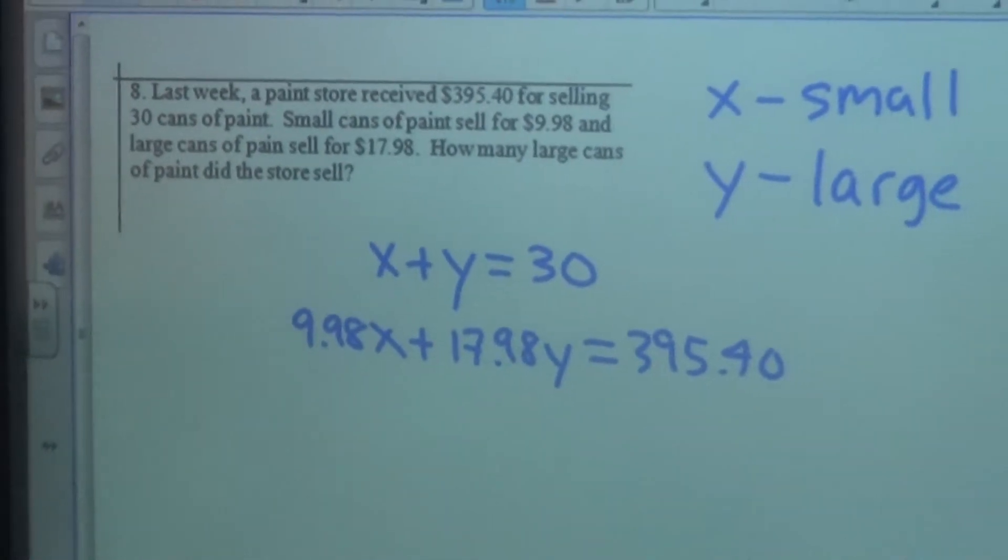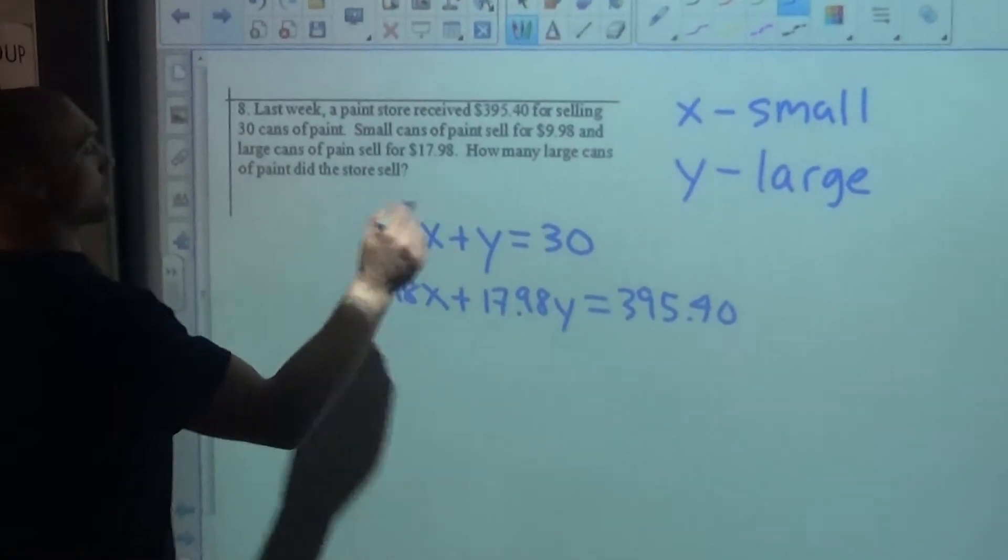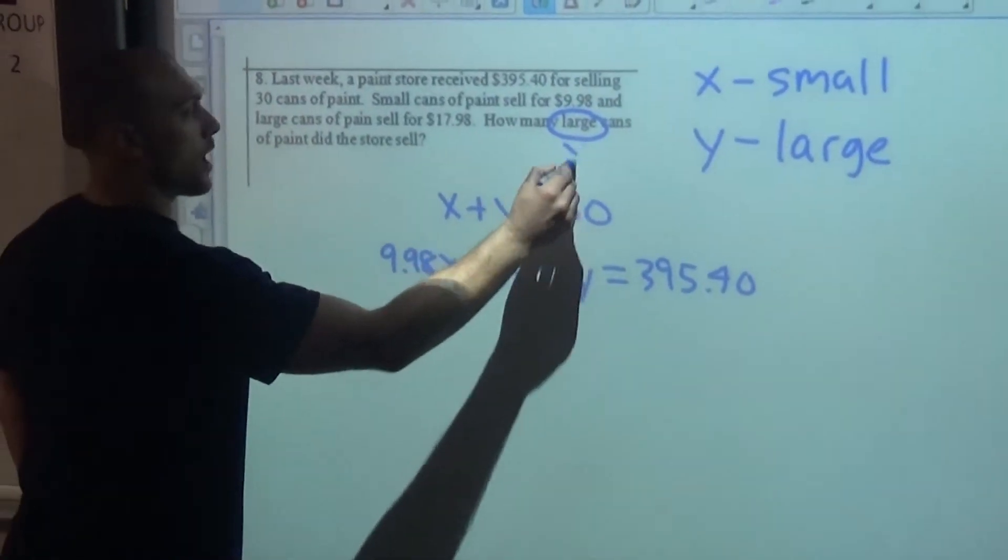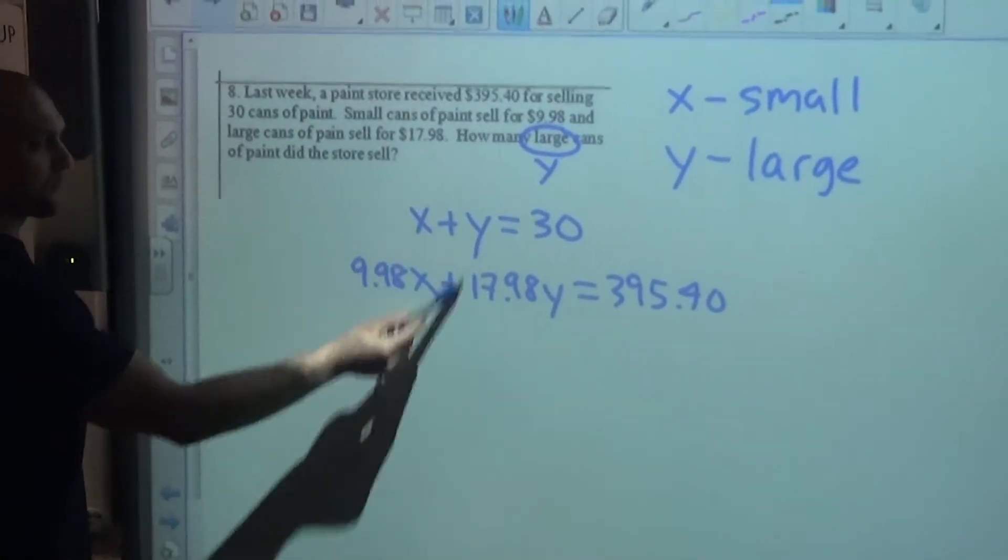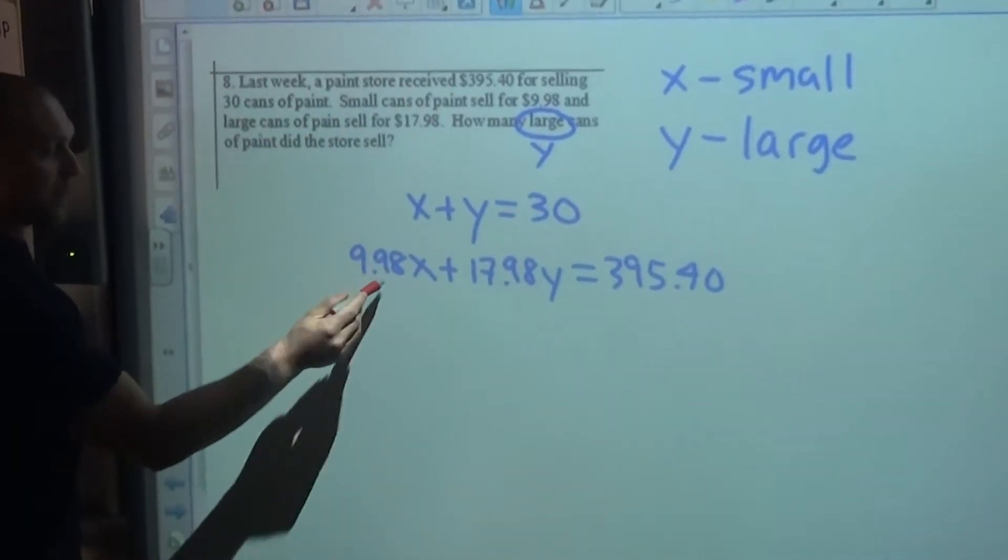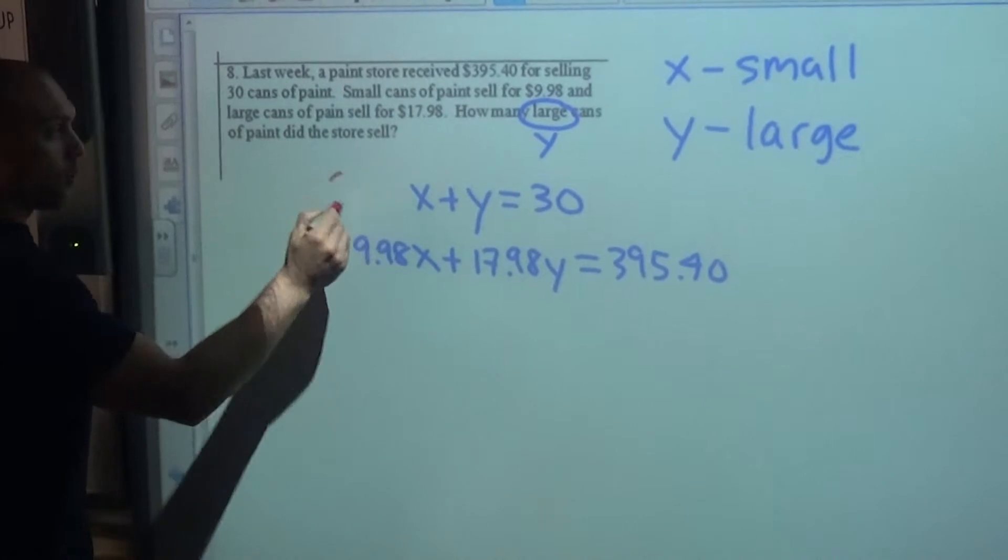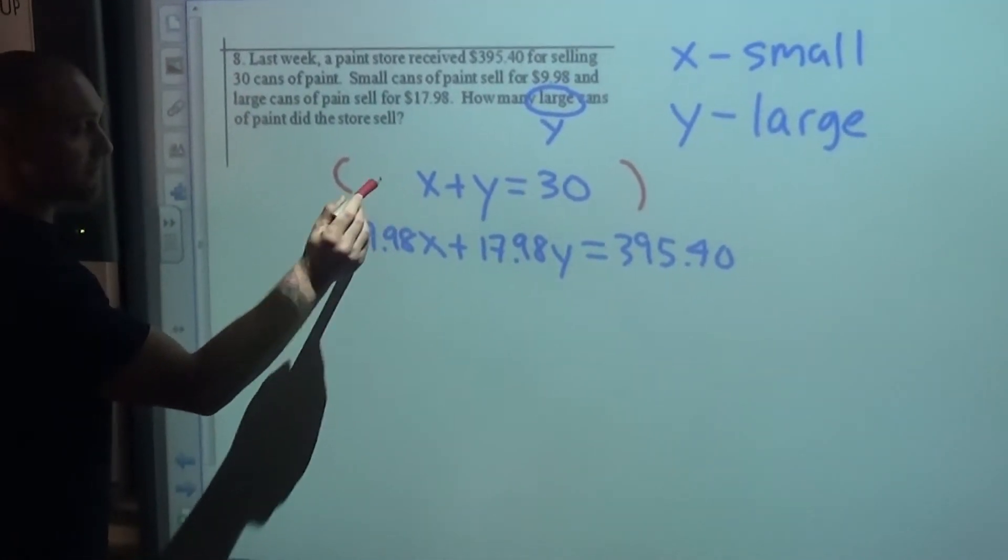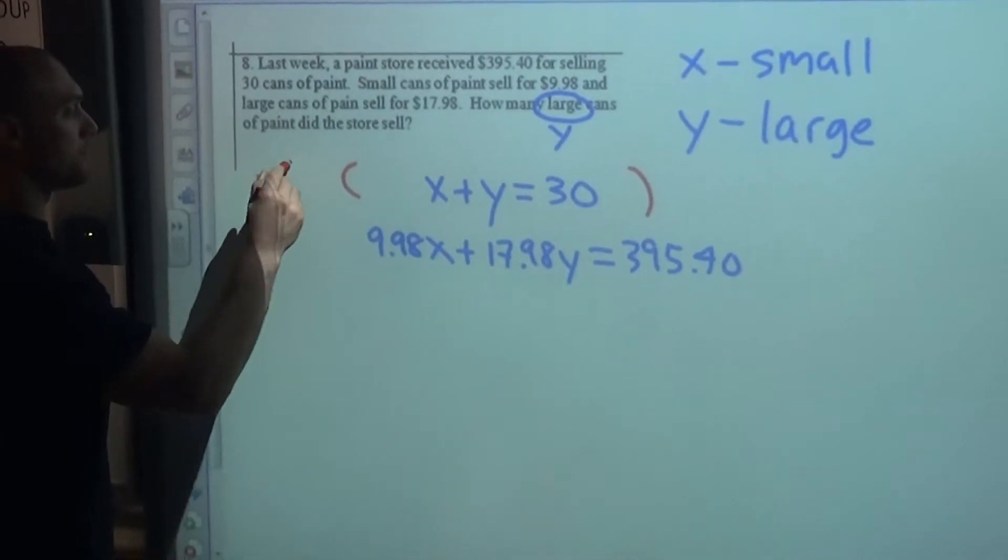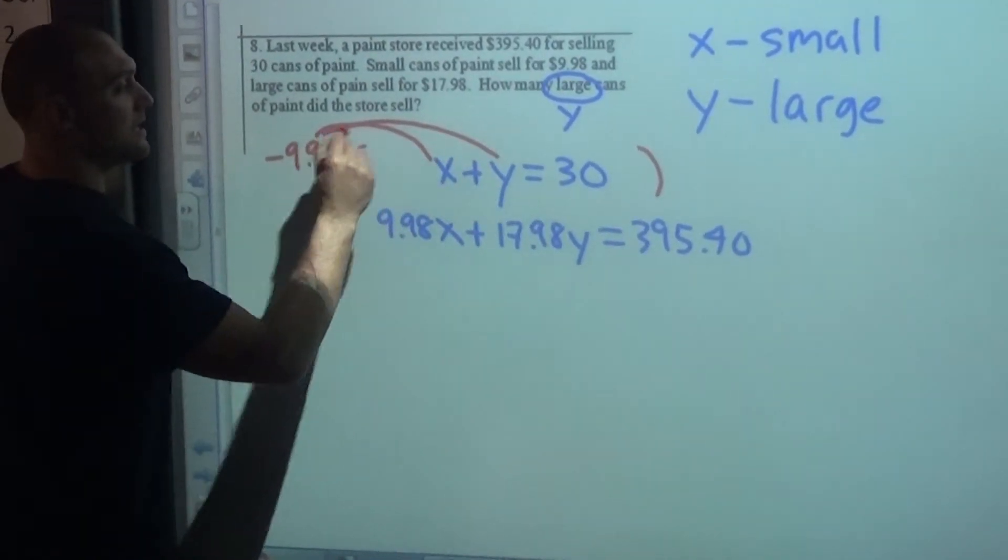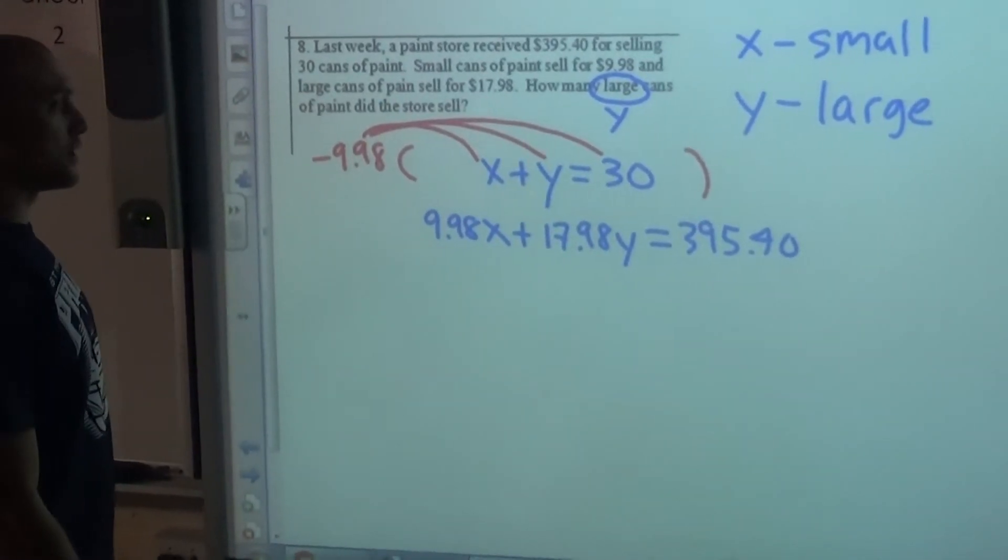Now we need to eliminate one of our variables. We're actually solving for large cans of paint, which is y, so we want to eliminate our x variable. If this is positive $9.98 in front of this x, I want to get a negative $9.98 in front of this x. So I'm going to multiply this whole top equation by negative $9.98.